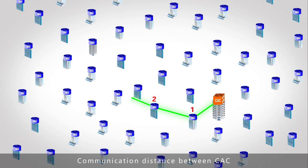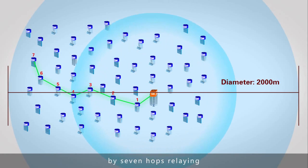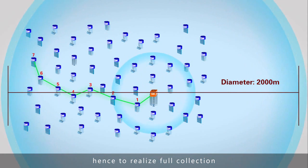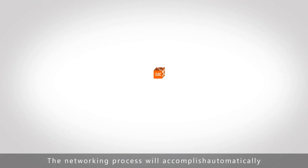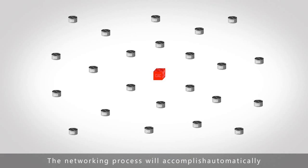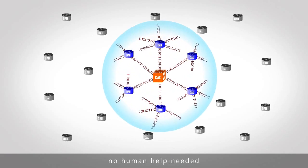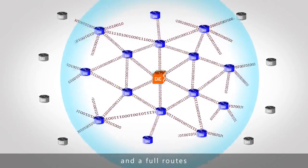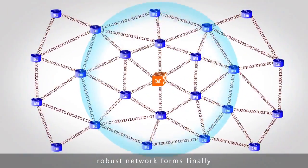Communication distance between CAC and DAU can reach a 2,000 meters diameter coverage by 7-hop relay, hence realizing full collection and full coverage. The networking process will be accomplished automatically after CAC starts networking — no human assistance needed. Under full routes, a robust network forms.